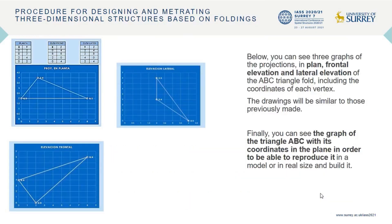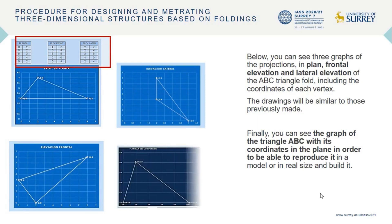Below, you can see three graphs of the projections in plan, frontal elevation, and lateral elevation of the ABC triangle fold, including the coordinates of each vertex. The drawings will be similar to those previously made. Finally, you can see the graph of triangle ABC with its coordinates in the plane, in order to be able to reproduce it in a model or in real size and build it.